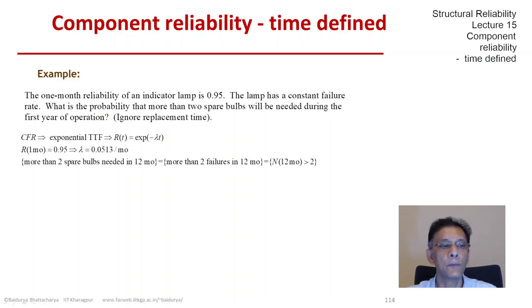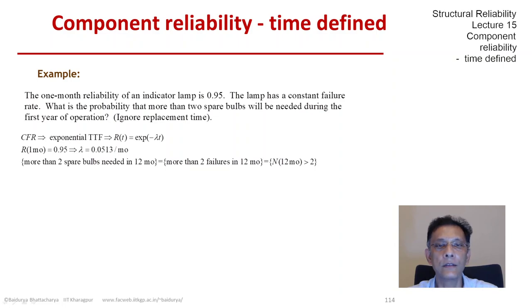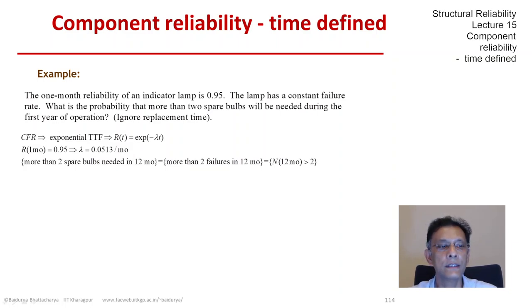The constant failure rate implies exponential time to failure, which implies that the reliability function is 1 minus the CDF of the exponential random variable, which is simply e^(−λt). Since the reliability is given as 0.95 at one month, we can deduce lambda, which turns out to be about 0.05 per month.